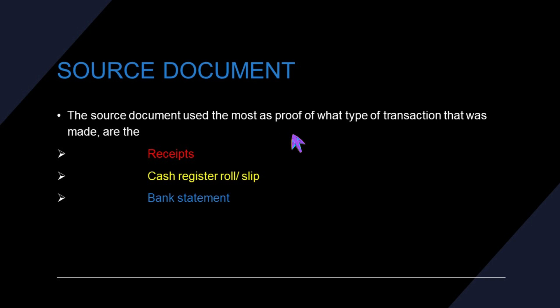Source documents to be used. Before we start recording, we need to understand the different source documents used when recording the cash receipts journal. The source document serves as proof of the type of transaction that was made. If ever you received something or sold something, you need to issue out a receipt, and that receipt serves as your source document. We also have the cash register roll and bank statement.